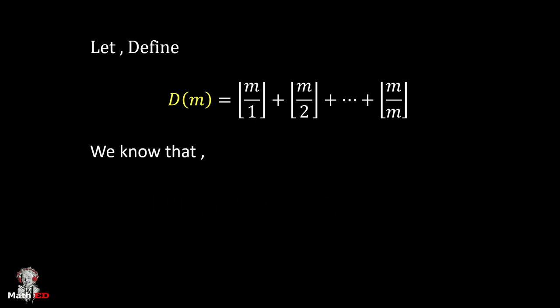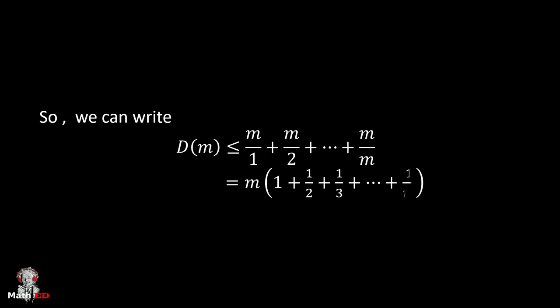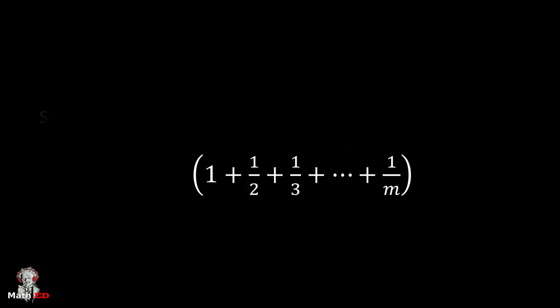It is well known that floor(x) is less than or equal to x. Using this property, we can say that D(m) ≤ m/1 + m/2 + ... + m/m. If we take m outside, then we get m(1 + 1/2 + ... + 1/m). This sequence is very well known.